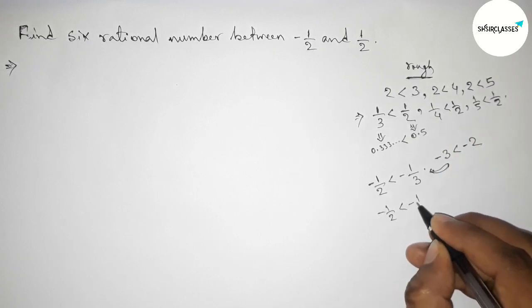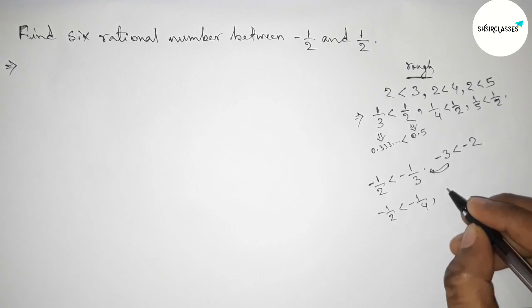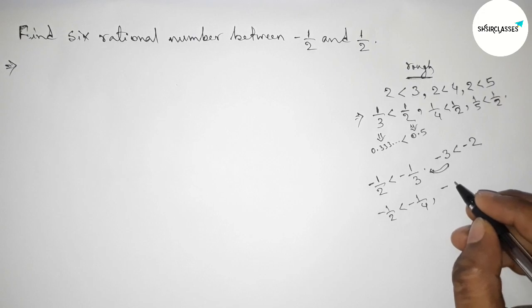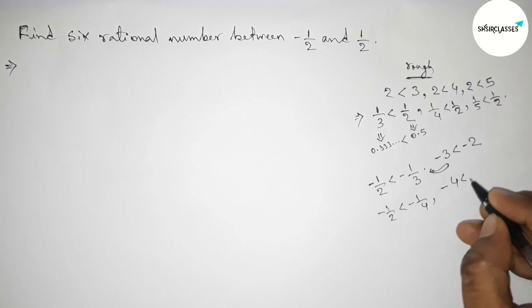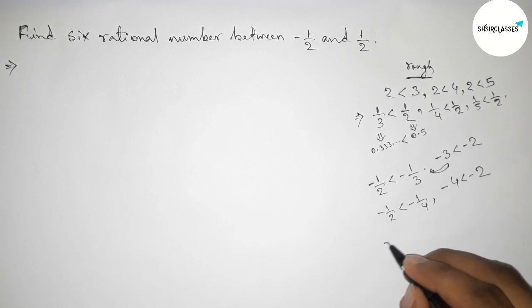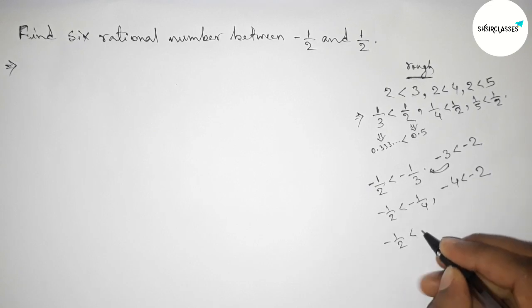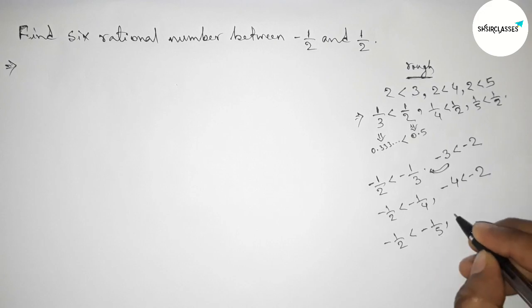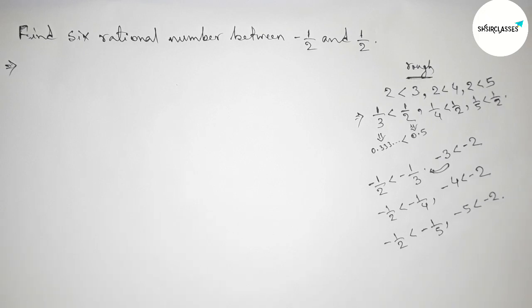So here minus 4 less than minus 2, their inverse will be changed. Now for minus 1 by 2 less than minus 1 by 5, so minus 5 less than minus 2. So now first write down here all the rational numbers between minus 1 by 2 and 1 by 2.